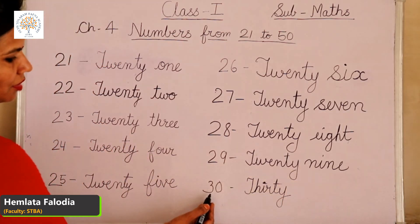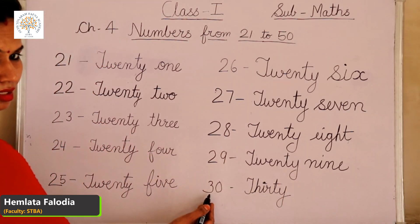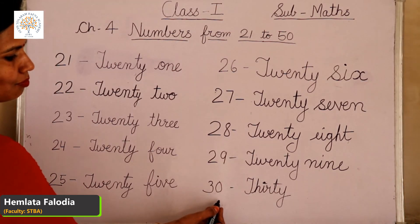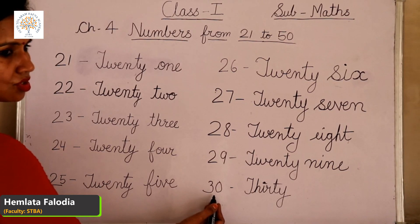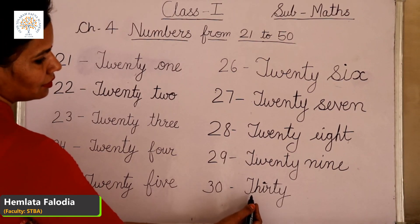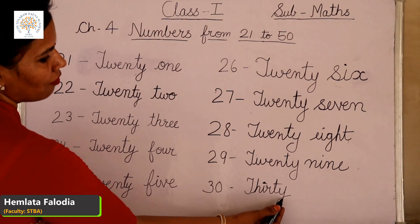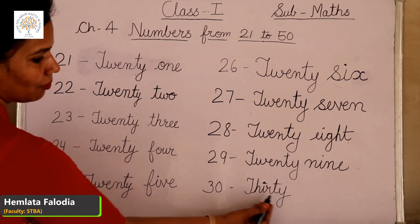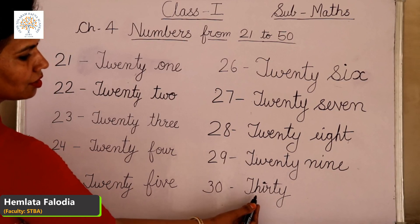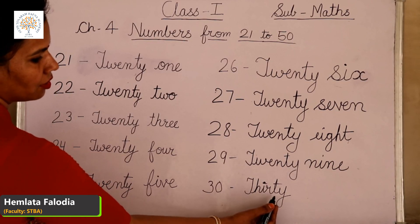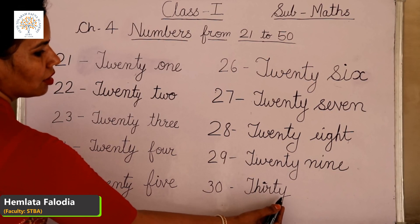Now, what is this? 30. 30 means 3 times 10: 10 plus 10 plus 10. 3 times 10 is 30. T-H-I-R-T-Y, 30. Again, repeat with me: T-H-I-R-T-Y, 30.